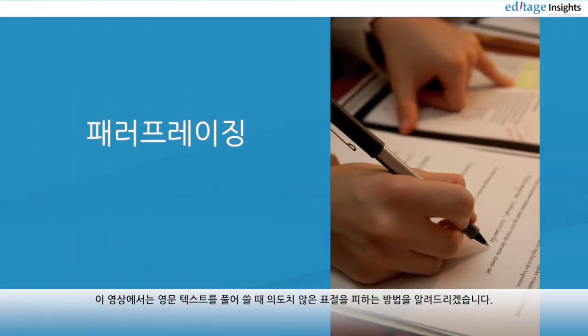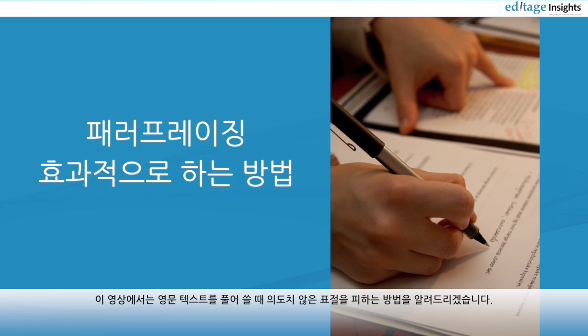Most often, the papers of these authors have either been rejected or returned with a request for major revisions on account of having 20% or more of plagiarized content. Many times it's because non-English speaking authors have difficulty paraphrasing or summarizing scientific literature into their own words. Paraphrasing is rewriting content from the source material into your own words. This video will provide you with some tips on how to paraphrase English text effectively so as to avoid unintentional plagiarism.